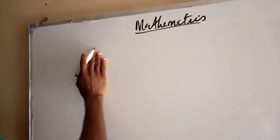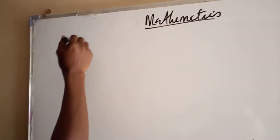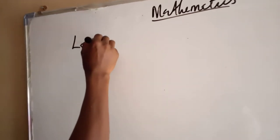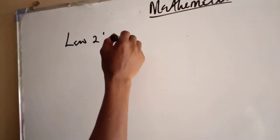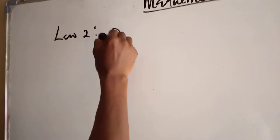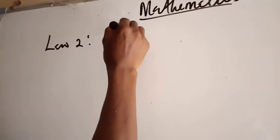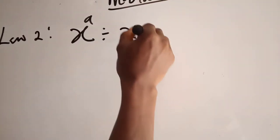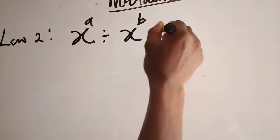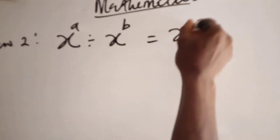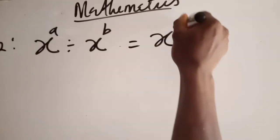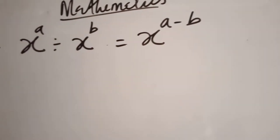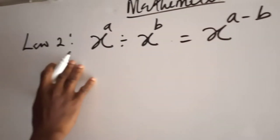We are looking at the Second Law of Indices, Law Number 2. The law states that x raised to the power a divided by x raised to the power b is equal to x raised to the power a minus b. This is the Second Law.